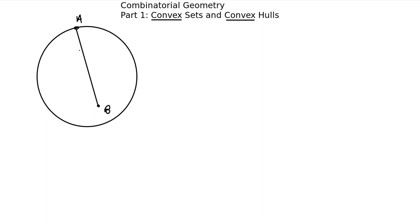Basically, any point on the segment AB is in this set. So, let's call this set X. So, X is convex, if and only if, for any two points A and B, the segment AB is fully contained in X.